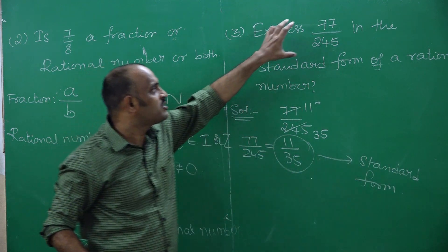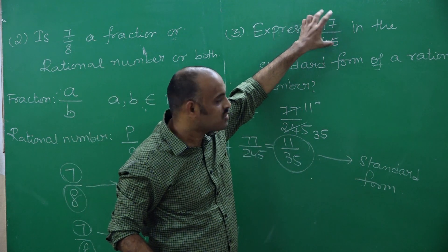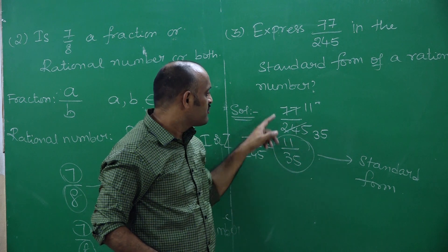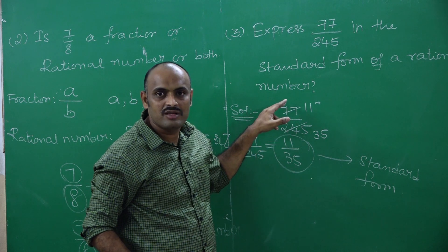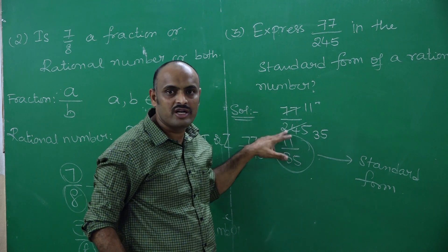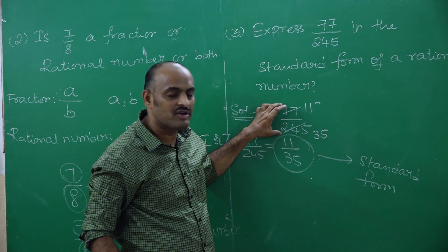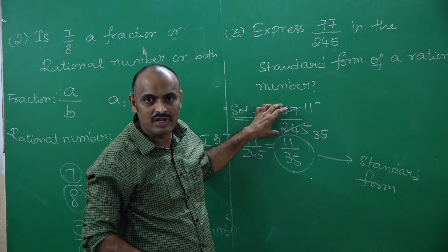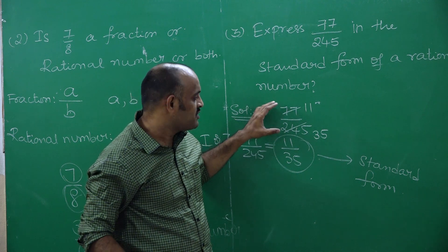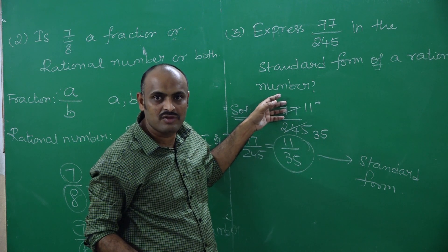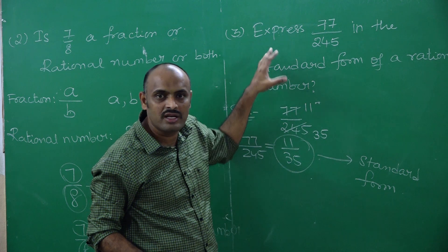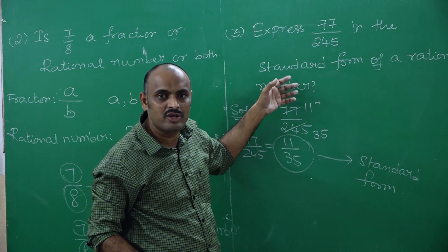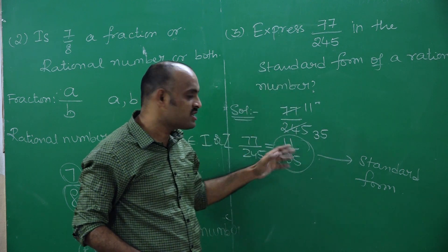So 77 by 245 is a rational number. To reduce it to standard form, we need to check whether both numerator and denominator have any common factor other than 1. If they don't, they are already in standard form; otherwise, we need to reduce it to simplest form.